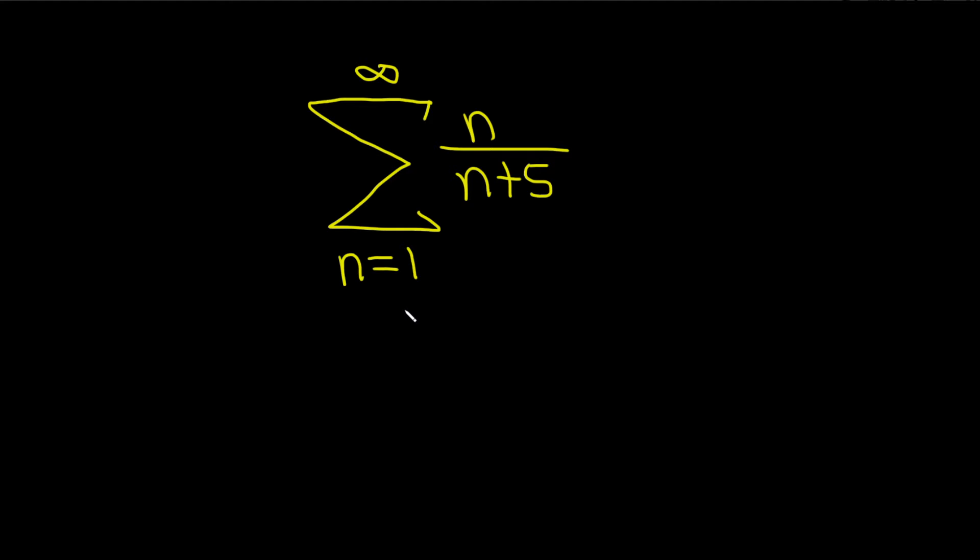Another test that's useful is called the nth term test. The nth term test says if you have an infinite series like this and if you take the limit as n approaches infinity of a sub n and it's not equal to zero, this implies that you have divergence.